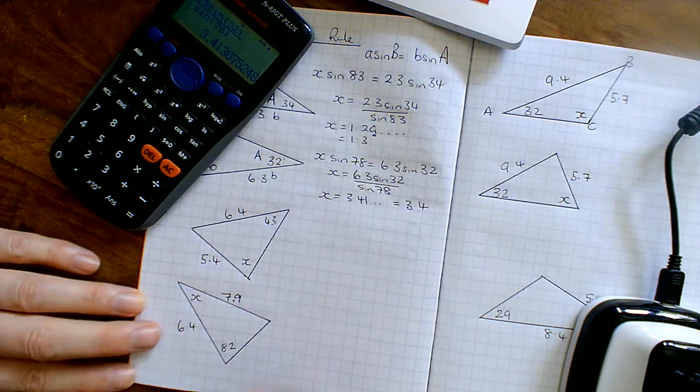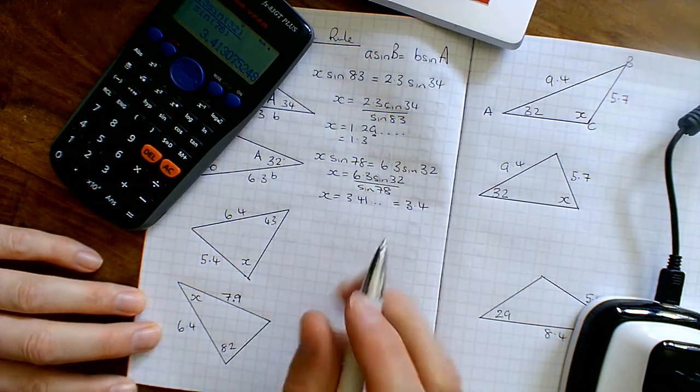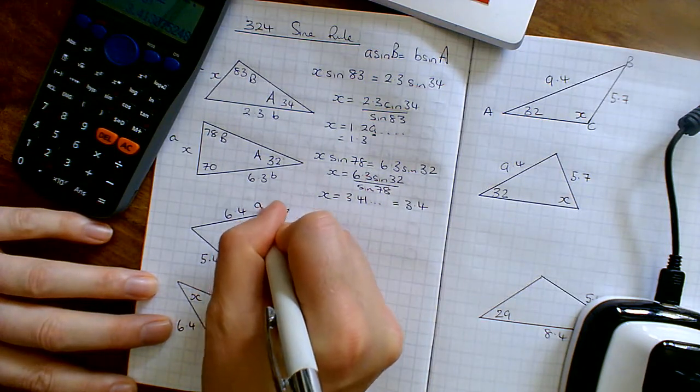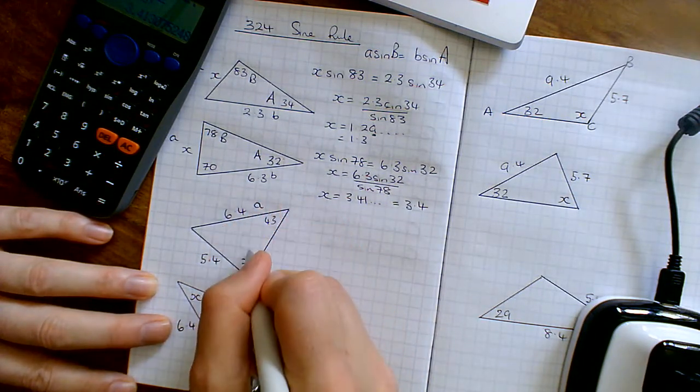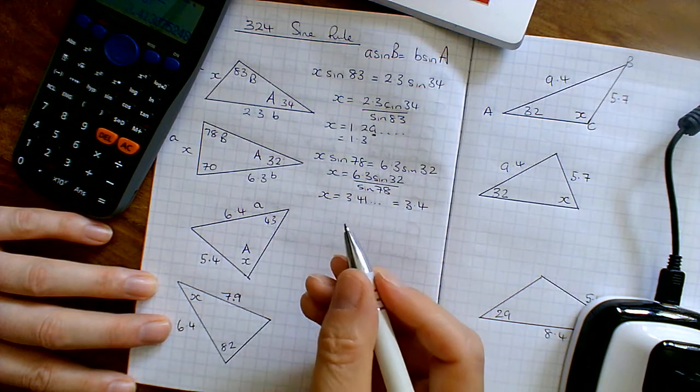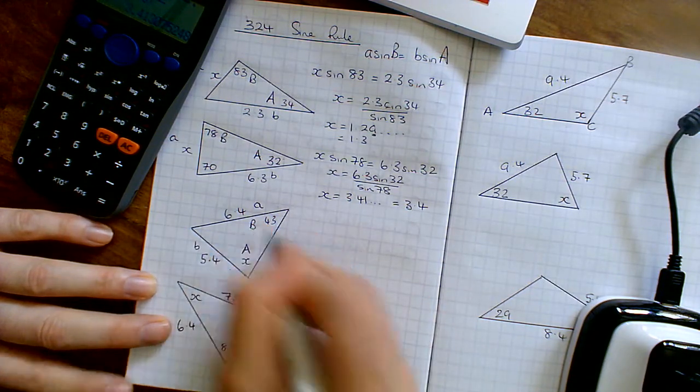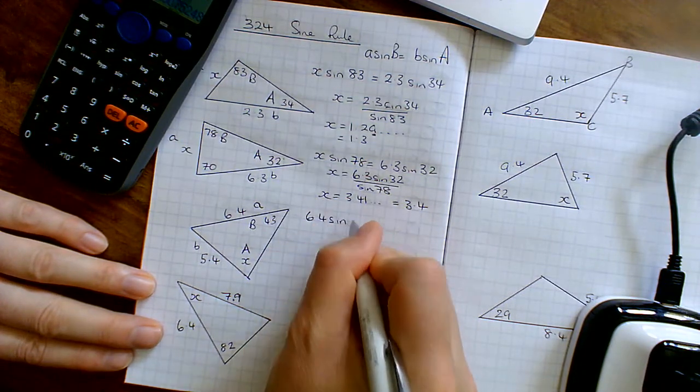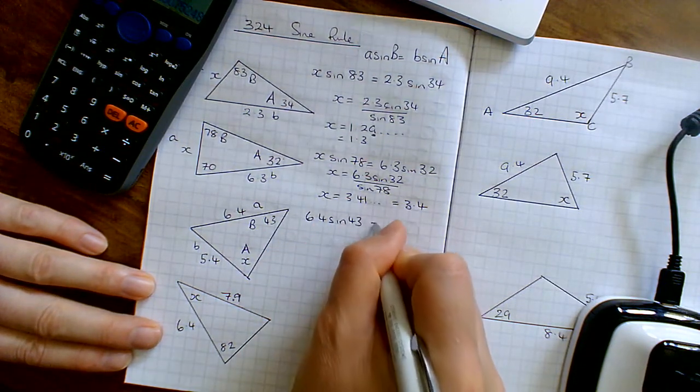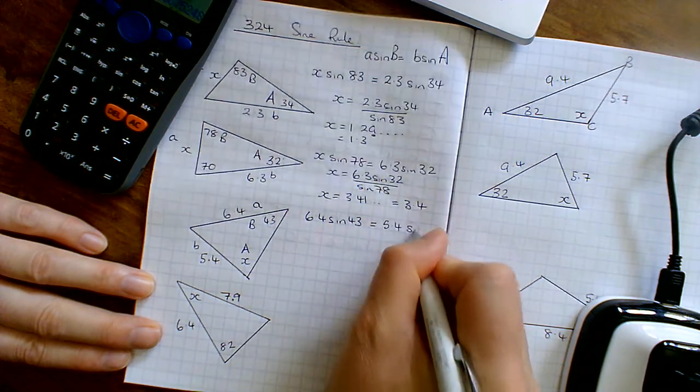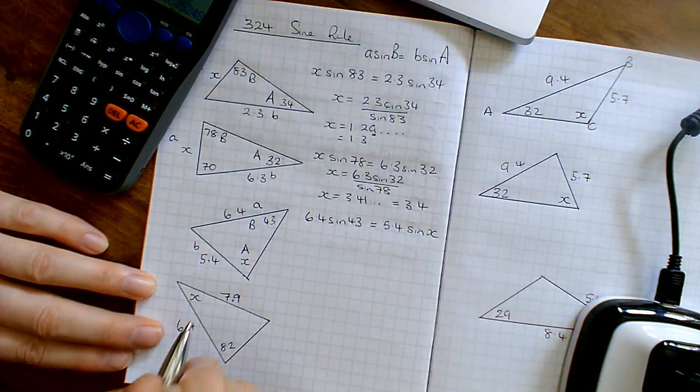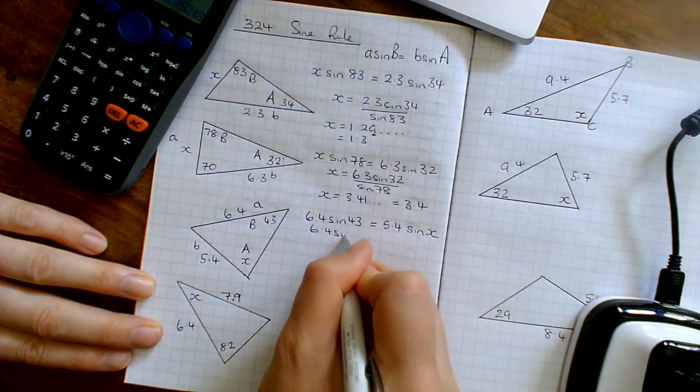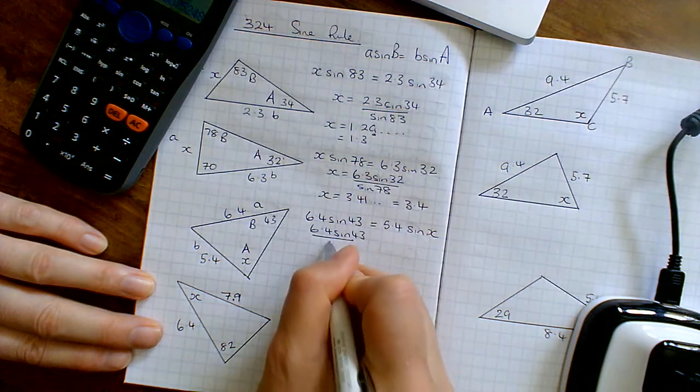Next question, I'm looking for the angle itself, and it says to the nearest degree. So it's exactly the same rule, I'll label up. We've got A and then that's capital A here. I've got side B and capital B, so then I'll fill the formula in. A is 6.4 sine of 43 equals B 5.4 sine of X. To get rid of this 5.4, just drop it on the other side, so 6.4 sine 43 over 5.4 equals sine X.